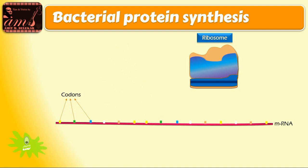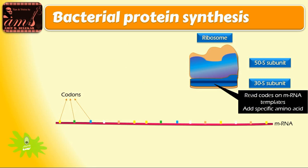Ribosomes are having two subunits: 30S subunit and 50S subunit. 30S subunit is responsible for reading codes on mRNA and adding specific amino acids in sequence.